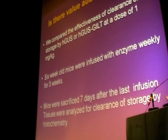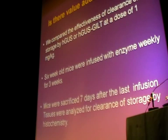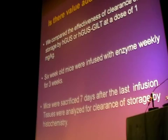Is there value added by GILT? We compared the effectiveness of the clearance of storage by H-GUS or H-GUS-GILT at a dose of 1 mg per kg. Six-week-old mice were infused with enzyme weekly for three weeks, and the mice were sacrificed seven days after the last infusion, and the tissues were analyzed for clearance of storage by histochemistry.